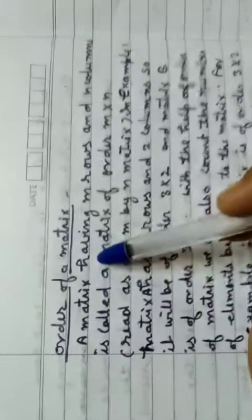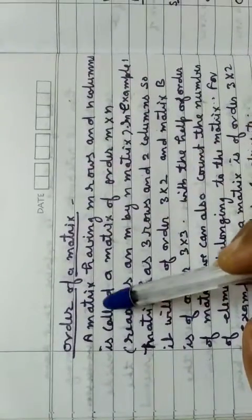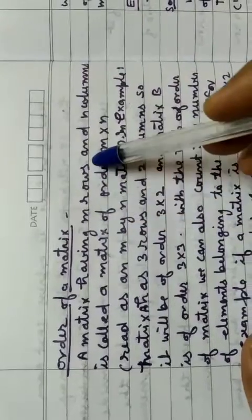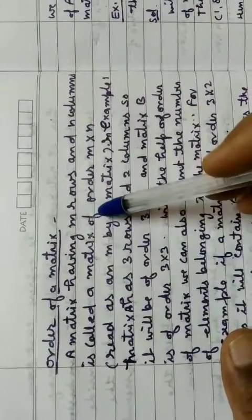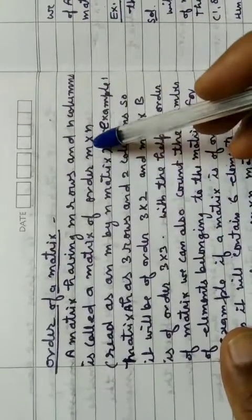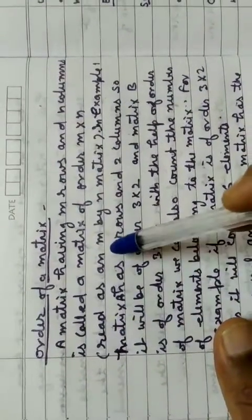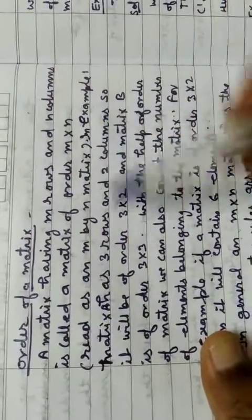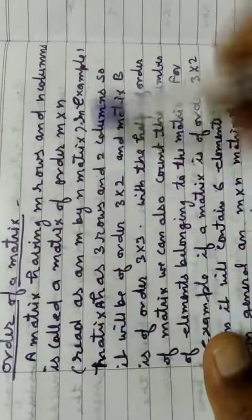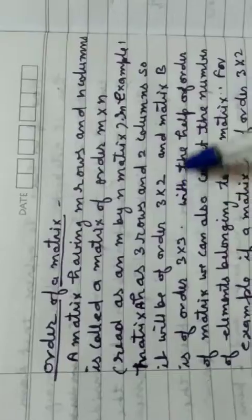A matrix having m rows and n columns is called a matrix of order m cross n. It is read as m by n matrix. In example, first matrix A has three rows and two columns, therefore its order will be 3 by 2.